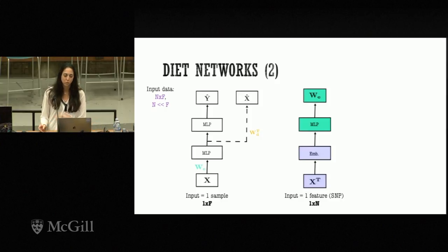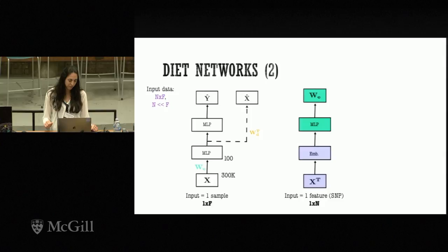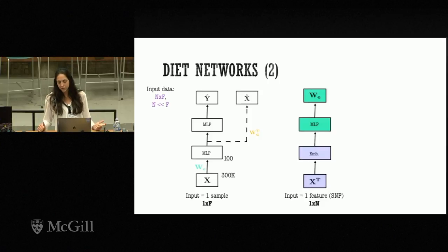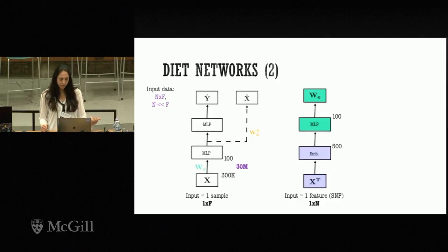What we do is have this auxiliary network predict the weights of the layers containing most of the parameters in the predictor network. The predictor network's parameters are therefore not free anymore — they are tied to the auxiliary network. For example, with 300k SNPs projected into a 100-dimensional representation, the first layer would have 30 million parameters. But if we use an auxiliary network with a 500-dimensional embedding projected to 100 dimensions, we reduce the free parameters to just 50k.